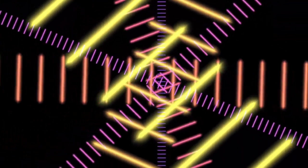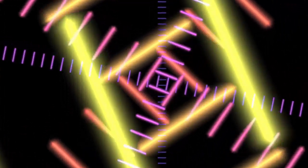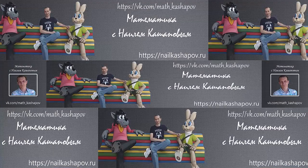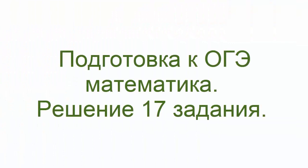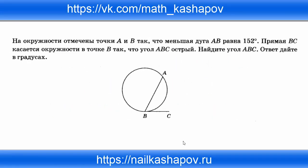Hello everyone! Сегодня у нас подготовка к ЕГЭ, математика, 17 задание — геометрия. На окружности отмечены точки А и В, меньшая дуга АВ равна 152 градуса. Прямая BC касается окружности в точке B, угол ABC — острый. Найдите угол ABC.